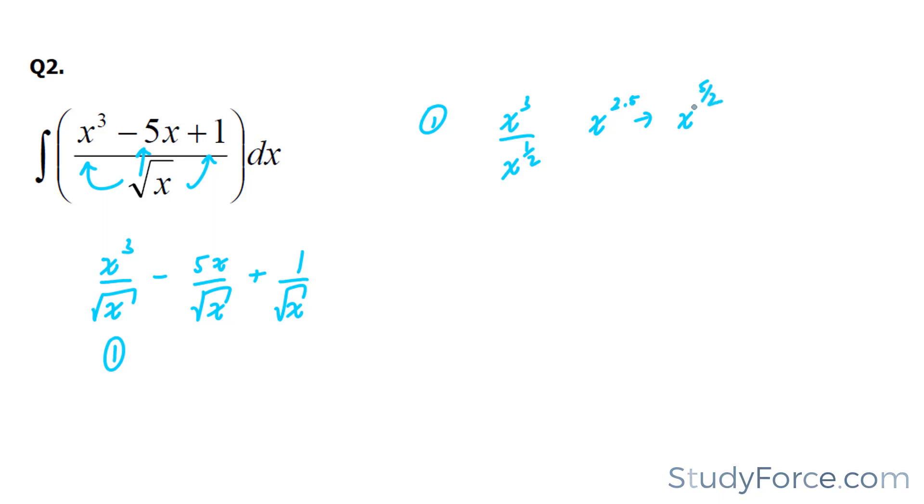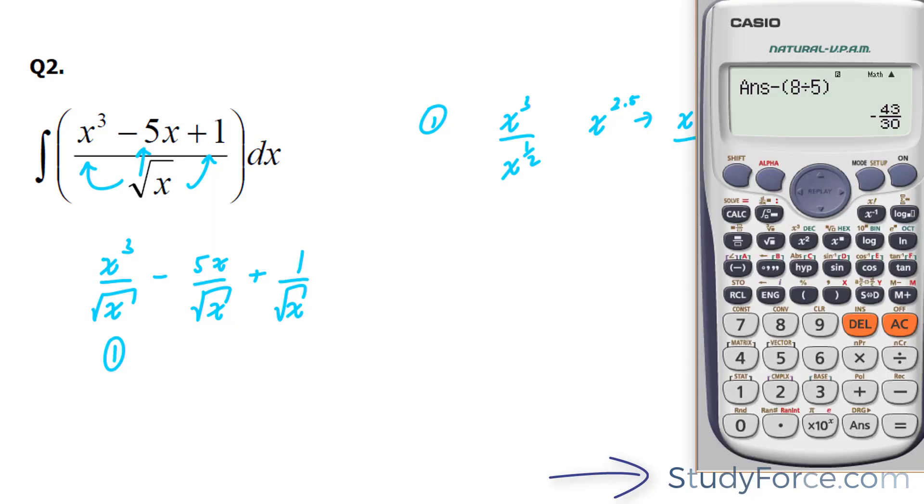So we can find the antiderivative of x to the power of 5 over 2. Now to do that, you're going to need to add a 1 to the exponent. And then whatever that is, you put it at the bottom. So let's find out.